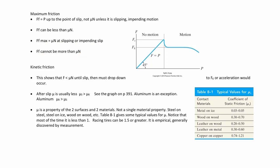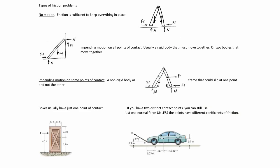Kinetic friction is generally less than static friction — the coefficient of static friction is generally greater than the coefficient of kinetic friction, as you can see on this graph. The coefficient of friction is a property of two surfaces and two materials, not a single material property. You can't just say the coefficient of friction of wood or steel — it is always two surfaces in contact, like steel on ice or wood on wood.